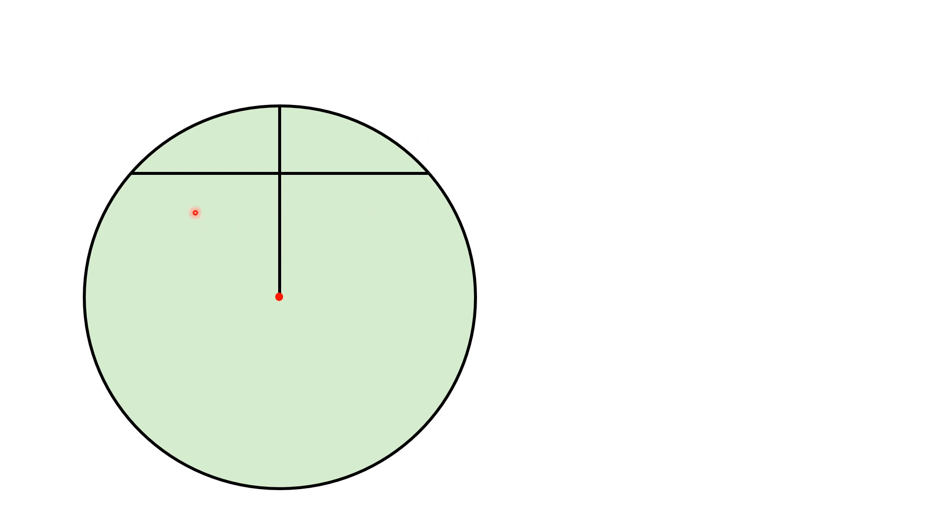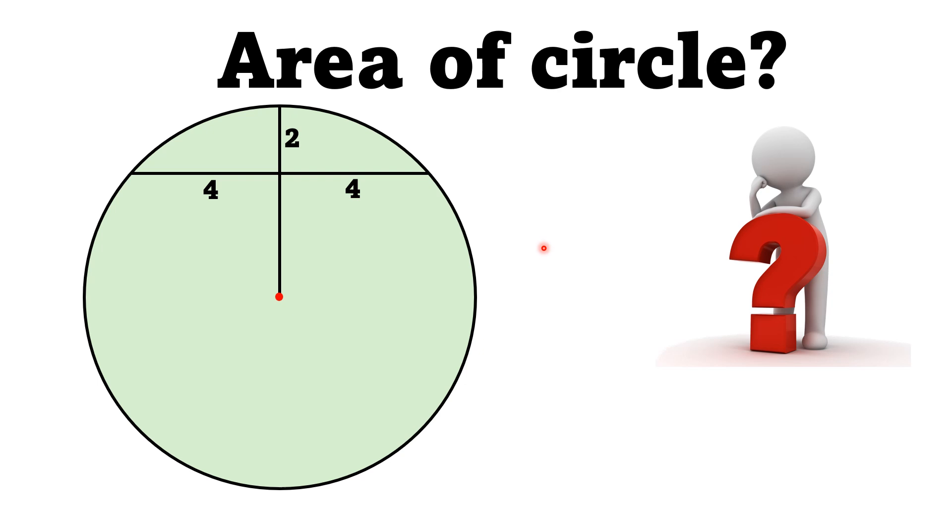If each side length of the chord is 4 units and this particular length is 2 units, then by this limited data we have to find the area of the circle. Keep in mind that the figure may not be 100% true to scale.